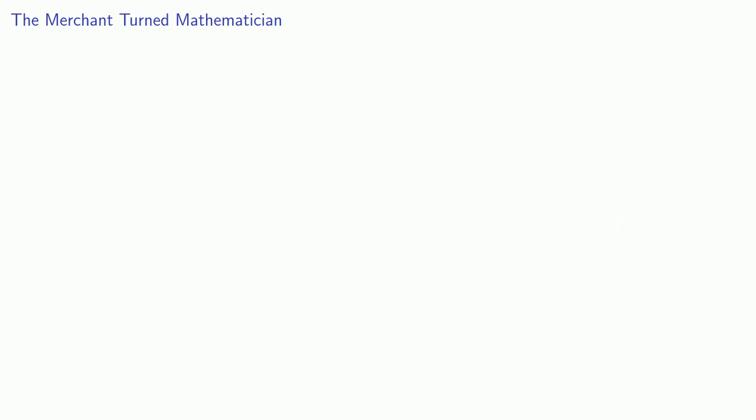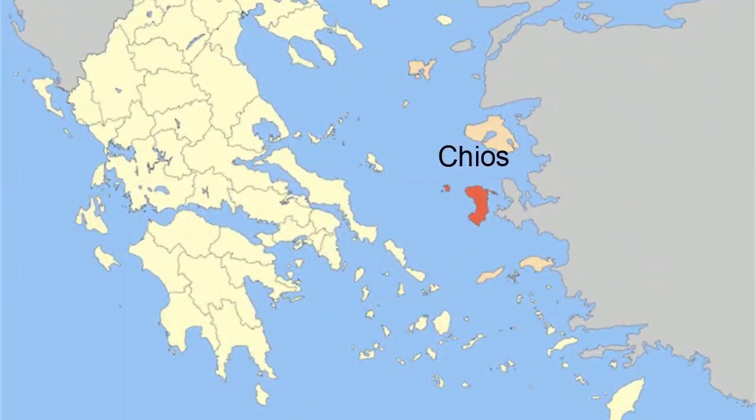So this brings us to Hippocrates of Chios. Chios is one of the many islands that make up Greece, and Hippocrates of Chios shouldn't be confused with a much more famous contemporary, Hippocrates of Kos. Hippocrates of Kos was the physician. Hippocrates of Chios was the mathematician.